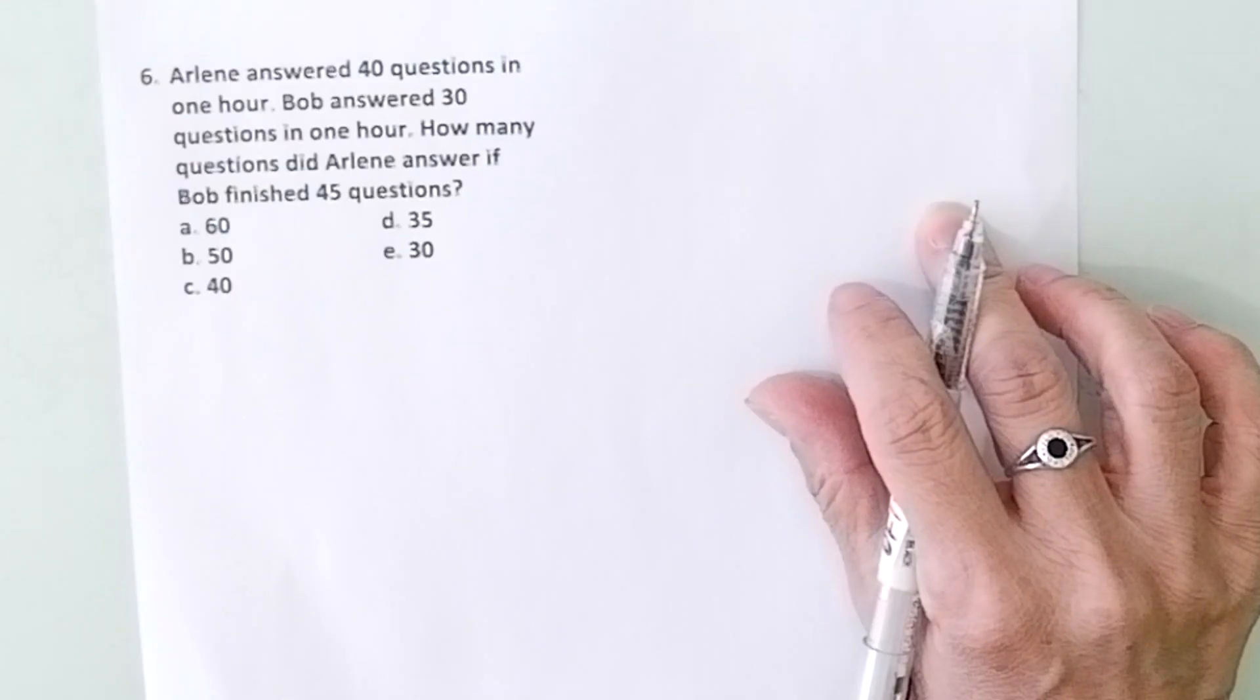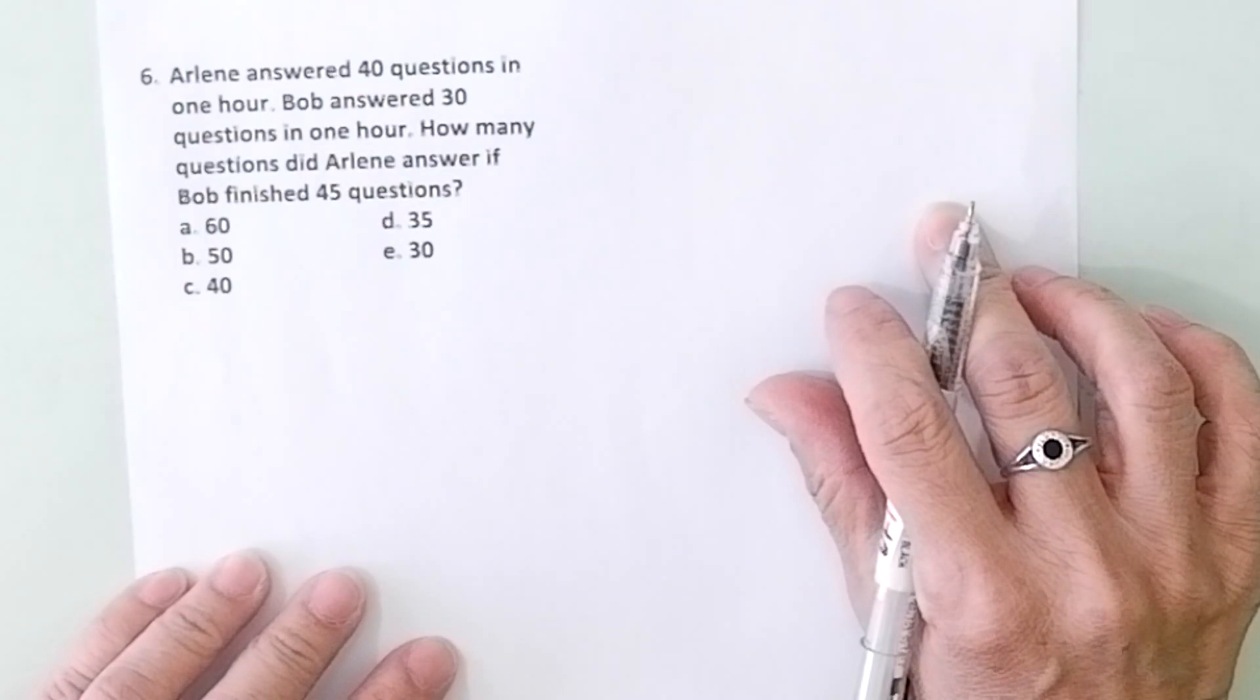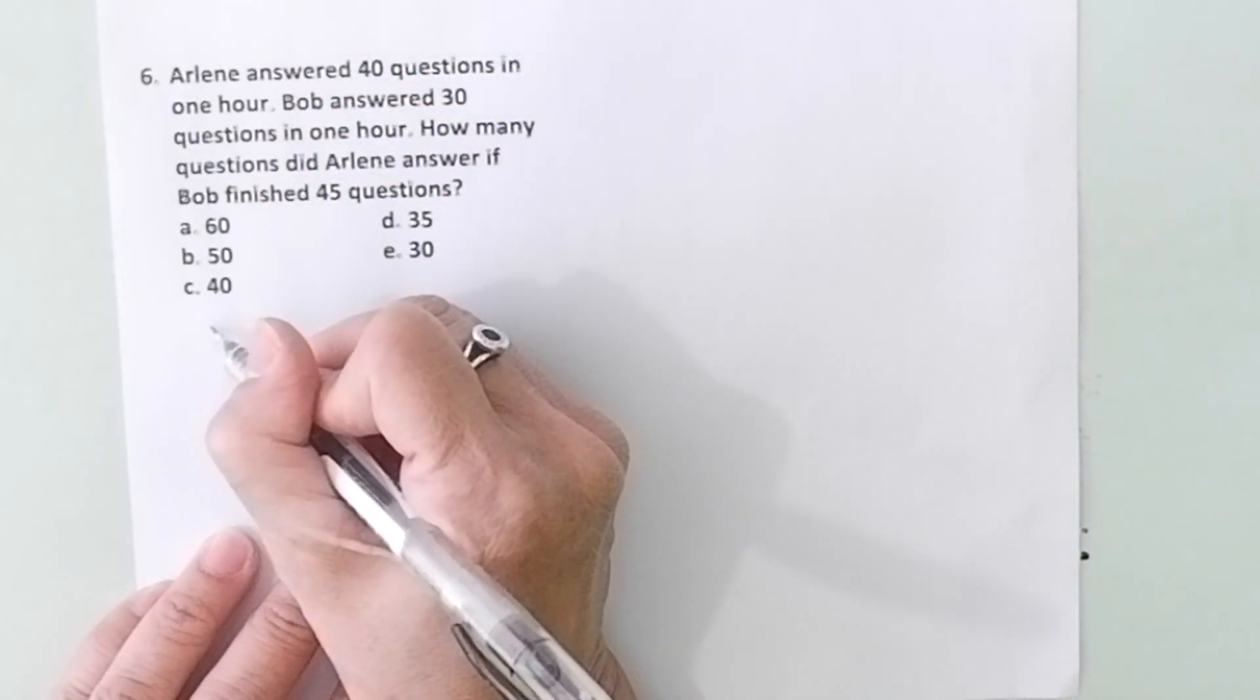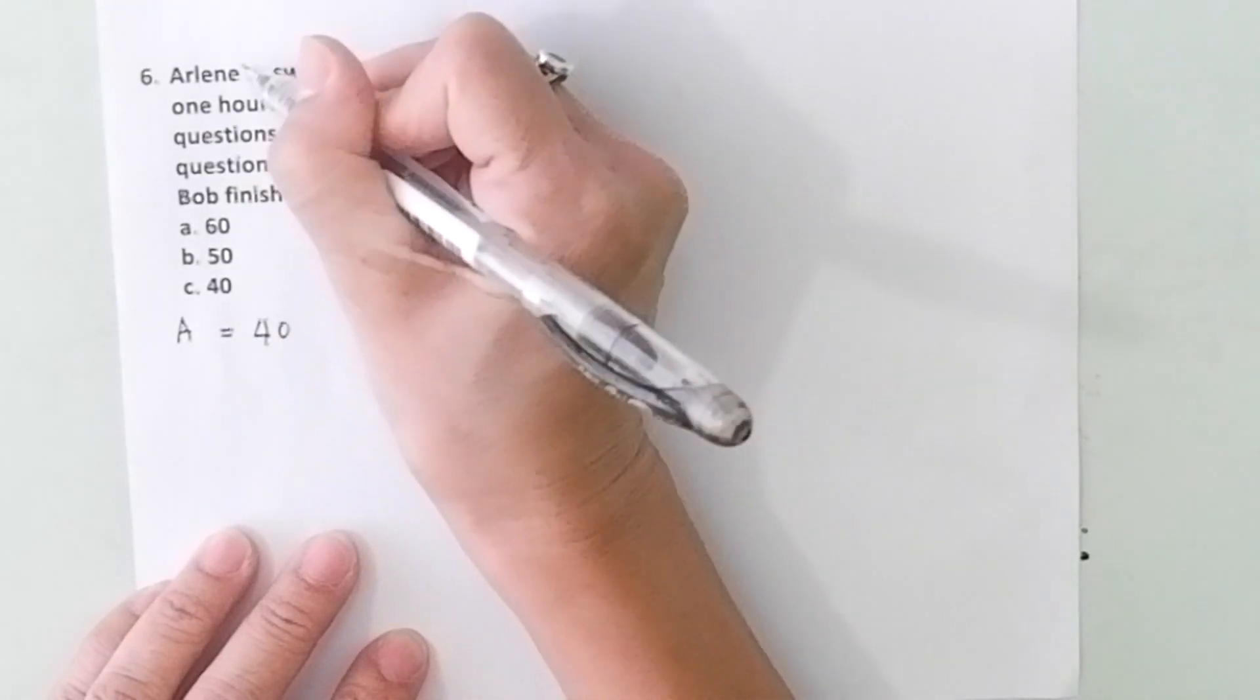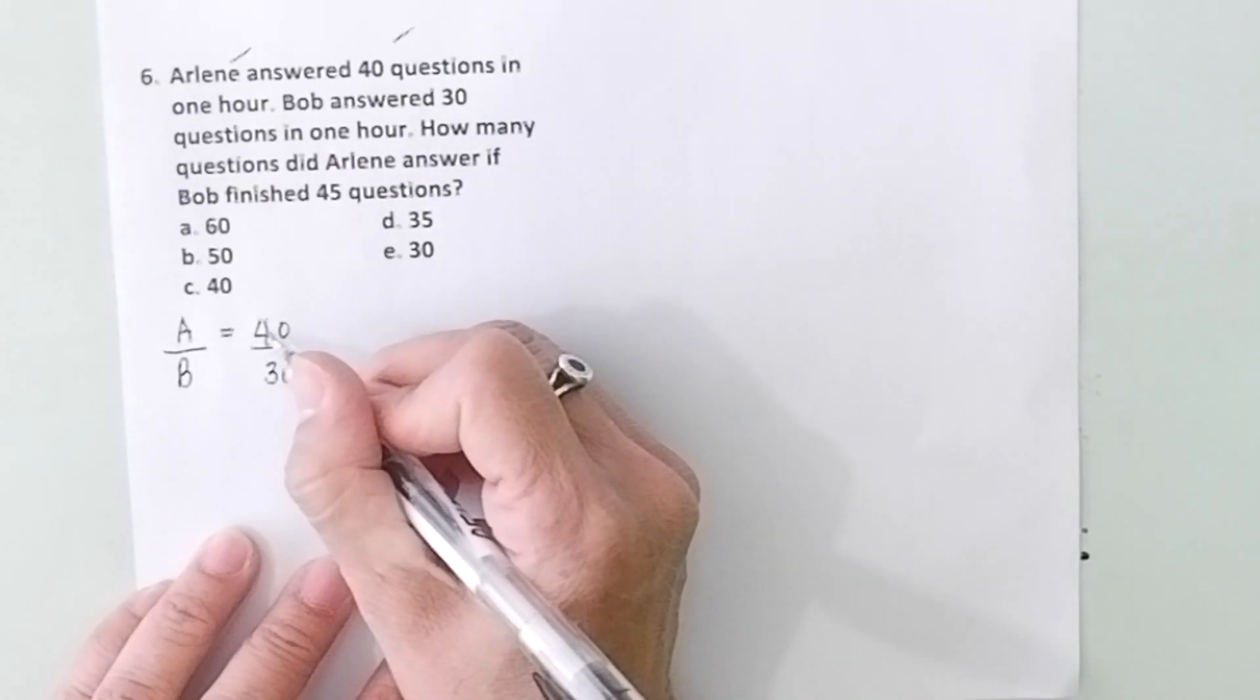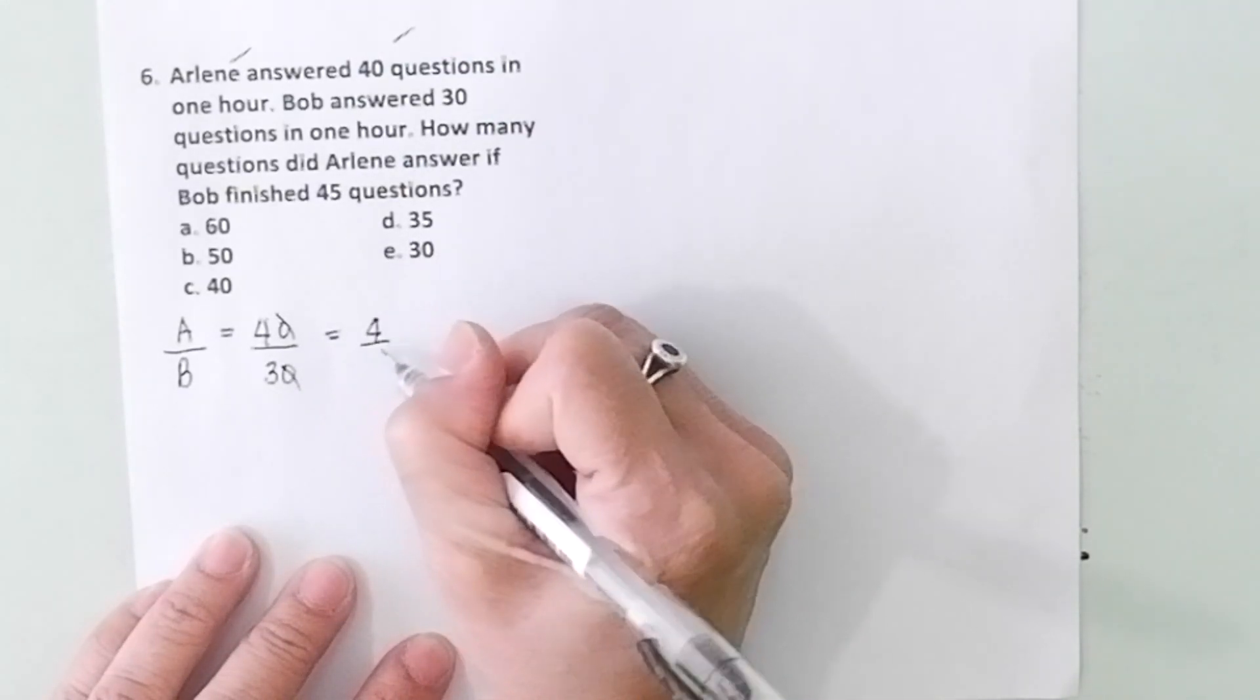Problem number 6: Arlene answered 40 questions in an hour. Bob answered 30 questions in one hour. How many questions did Arlene answer if Bob finished 45 questions? If you're given problems like this, you use ratio and proportion. So Arlene answered 40 questions in one hour. Bob answered 30 questions. So the ratio is 40 over 30. You can just cancel this, so it will be easier. This is 4 over 3.